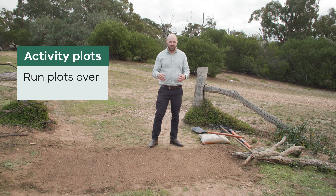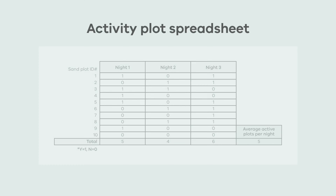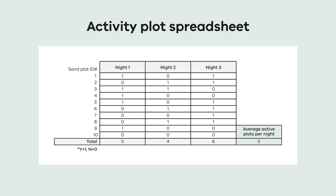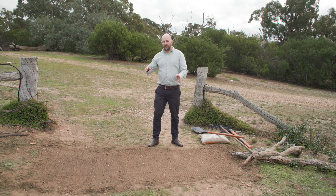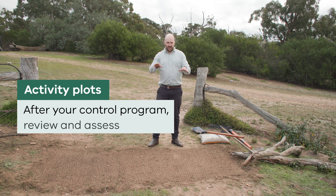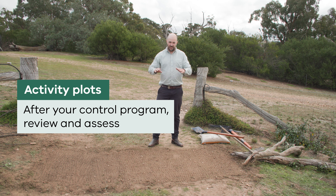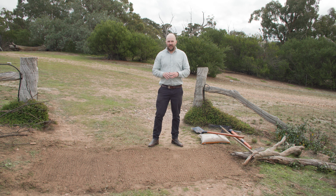Make sure plots are at regular intervals with enough to cover your property to get good numbers. It's also important to run monitoring over several nights, because on one night there might be an unusually high or low level of activity. If you've done it over three nights you can get an average and use that. After your control program you can measure again and compare, making sure you've done everything in the same way and using the same number of nights.